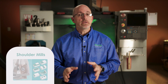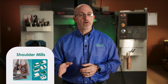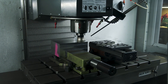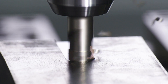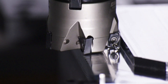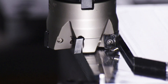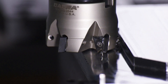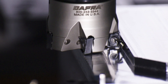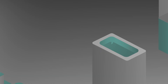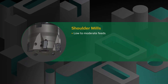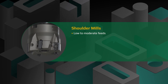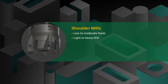Shoulder mills are the industry staple for milling. If a shop is doing any milling at all, odds are they've got some if not multiple styles of shoulder mills in the building. Shoulder mills generate a 90 degree square edge and are usable for most types of milling other than 3D contouring. Shoulder mills provide consistent chip thickness and can be run at low to moderate feed rates and from light to heavy depths of cut.